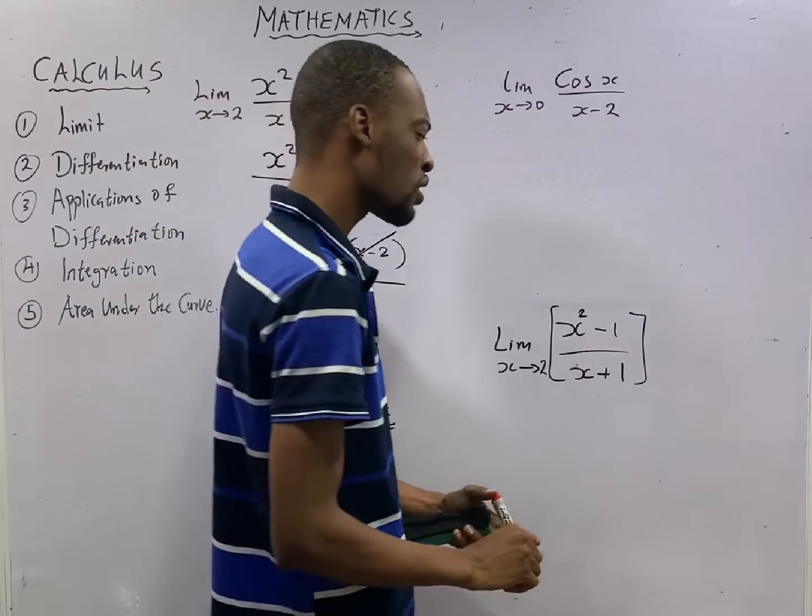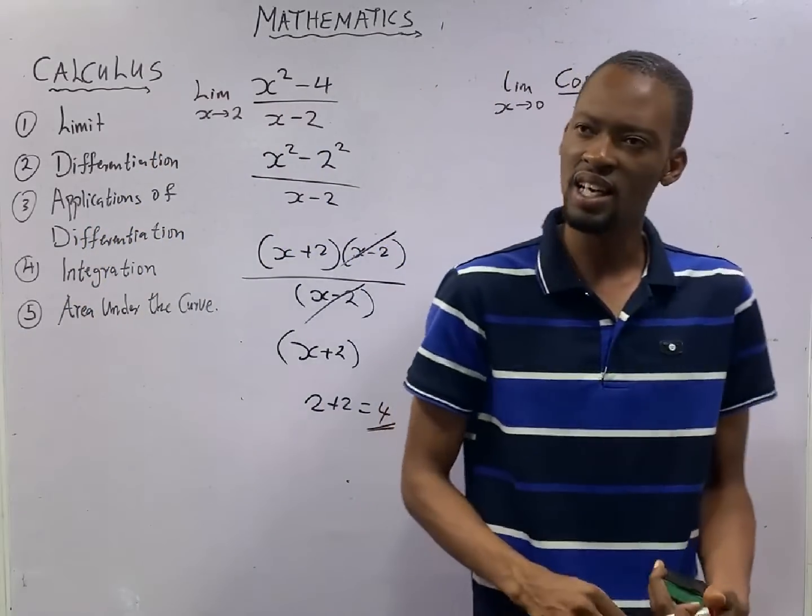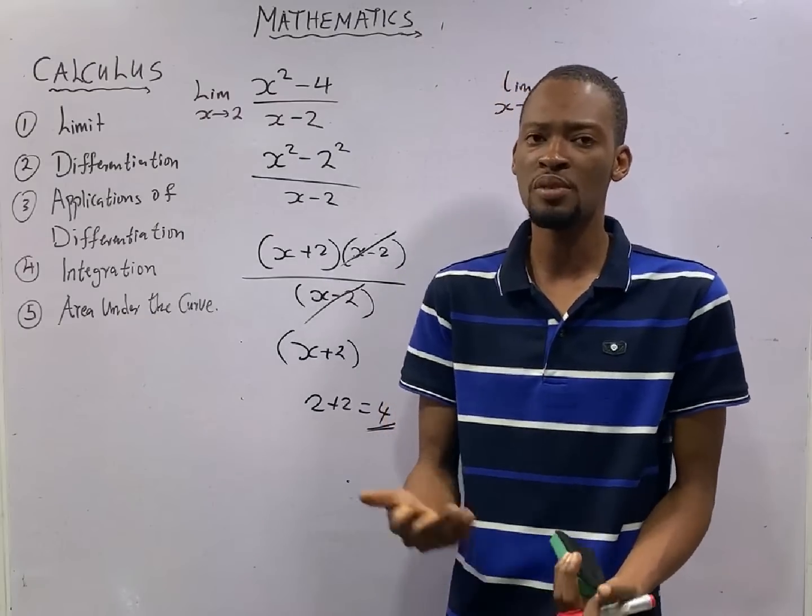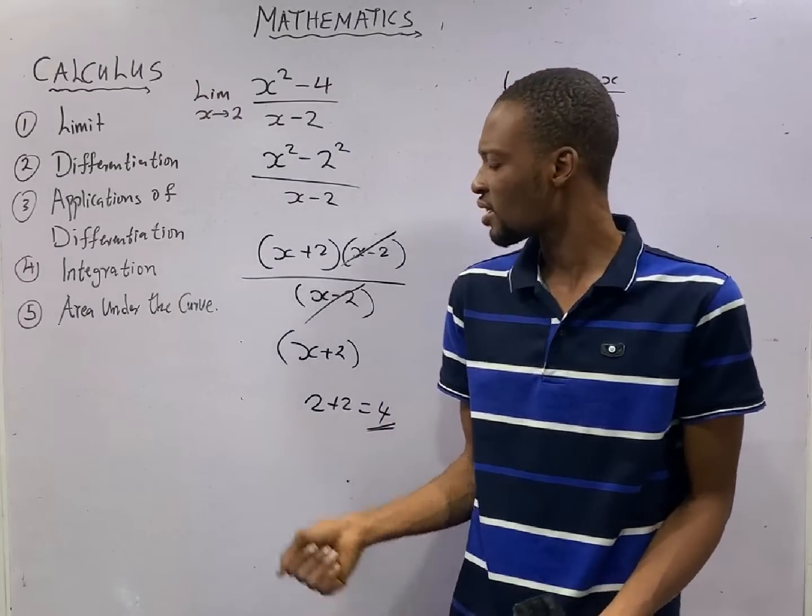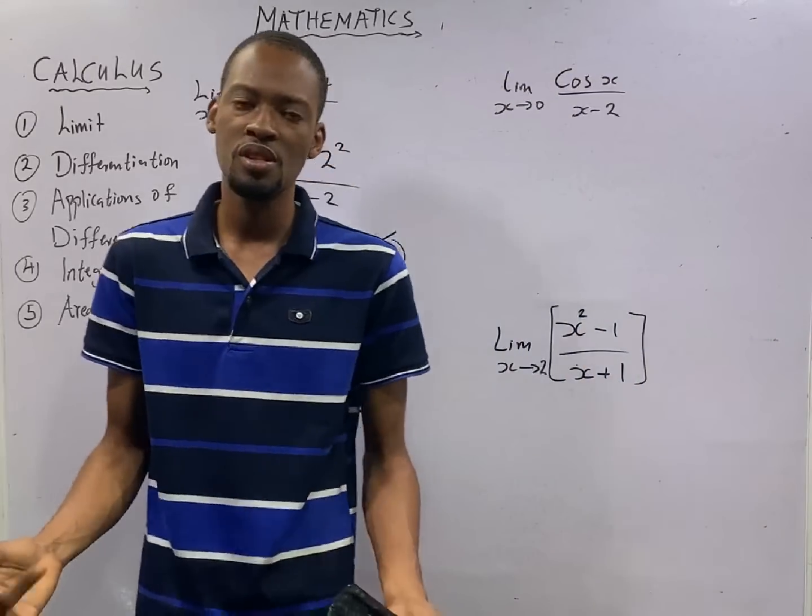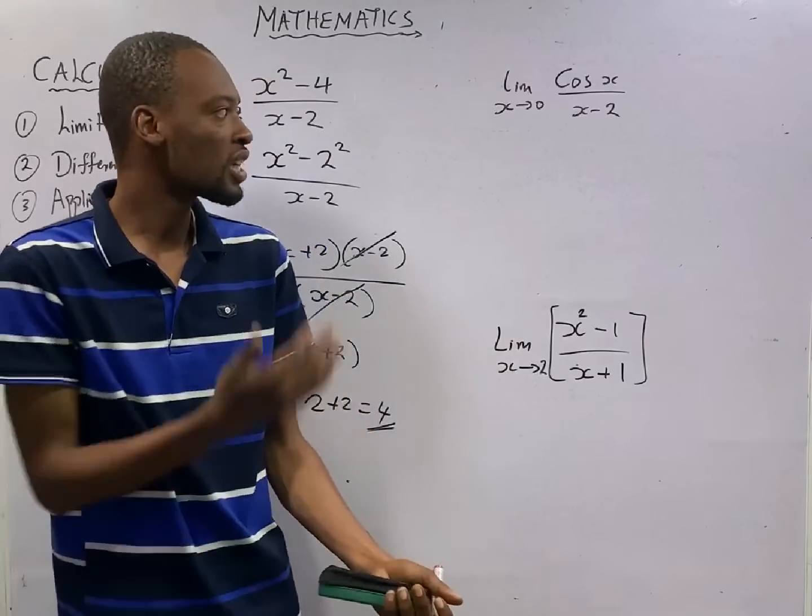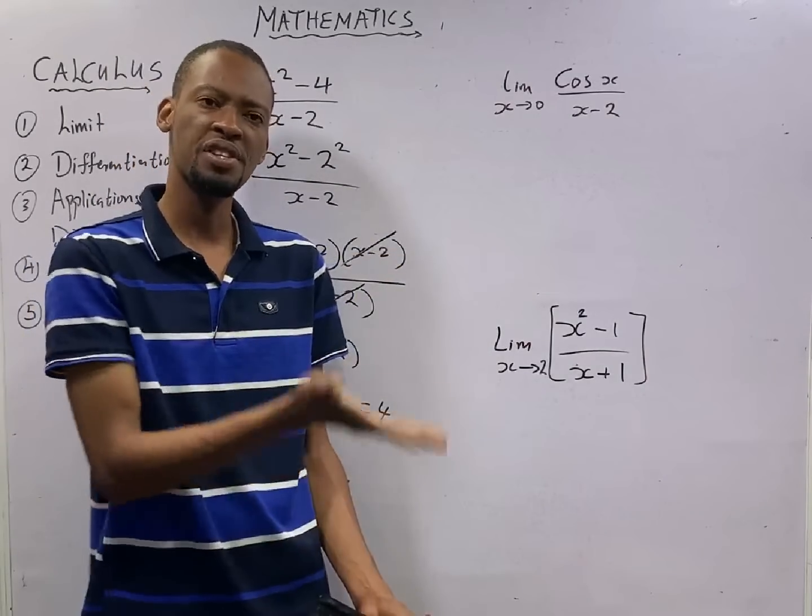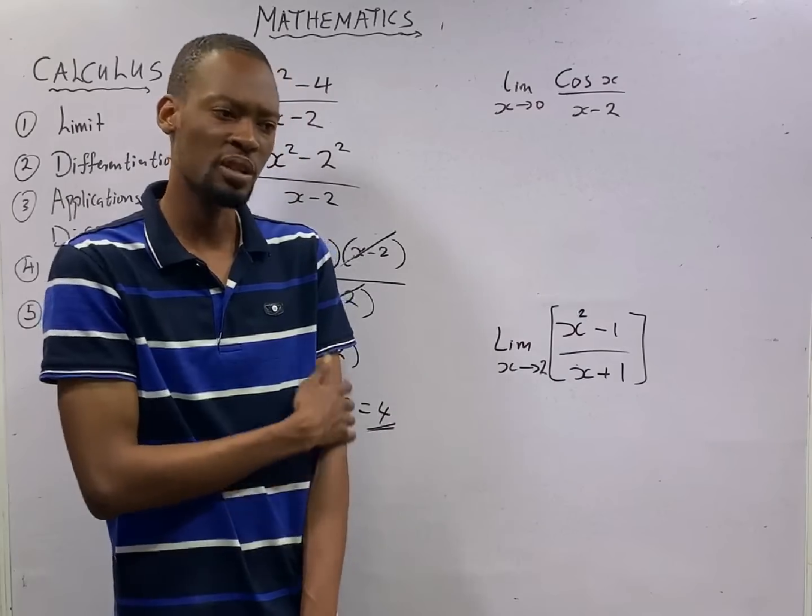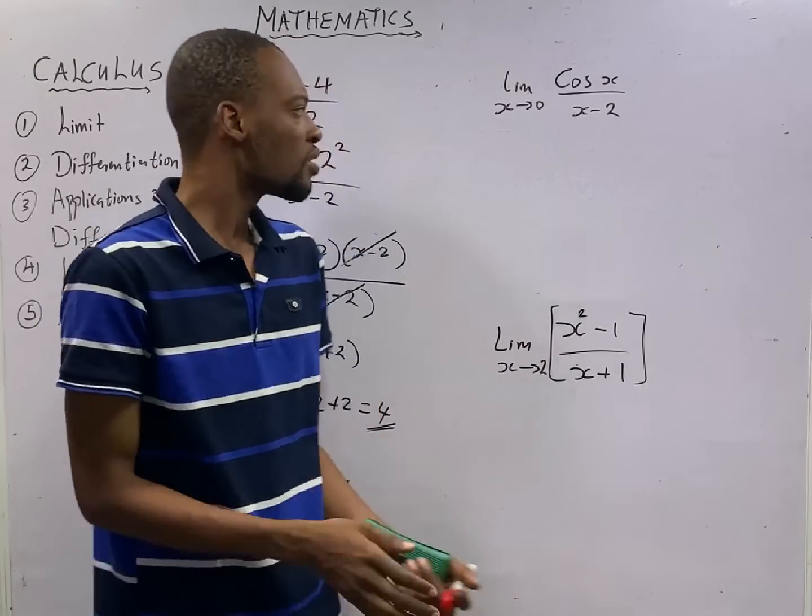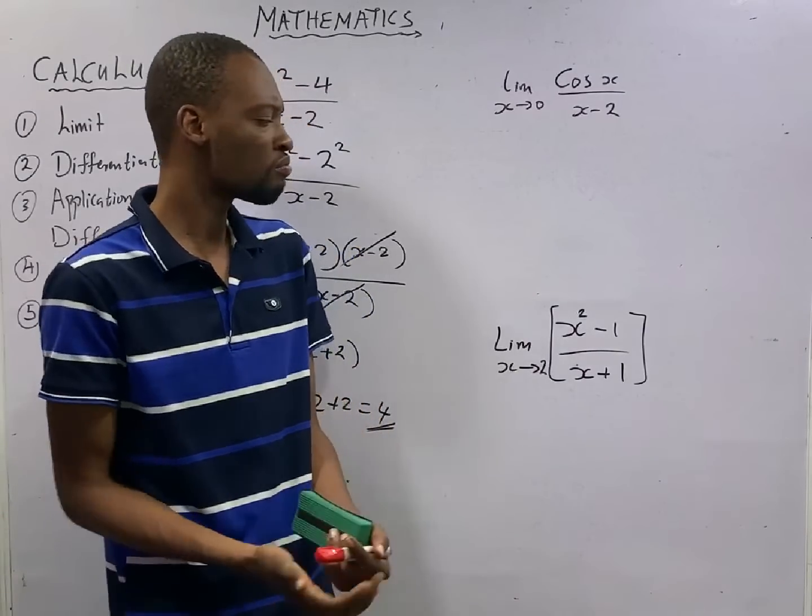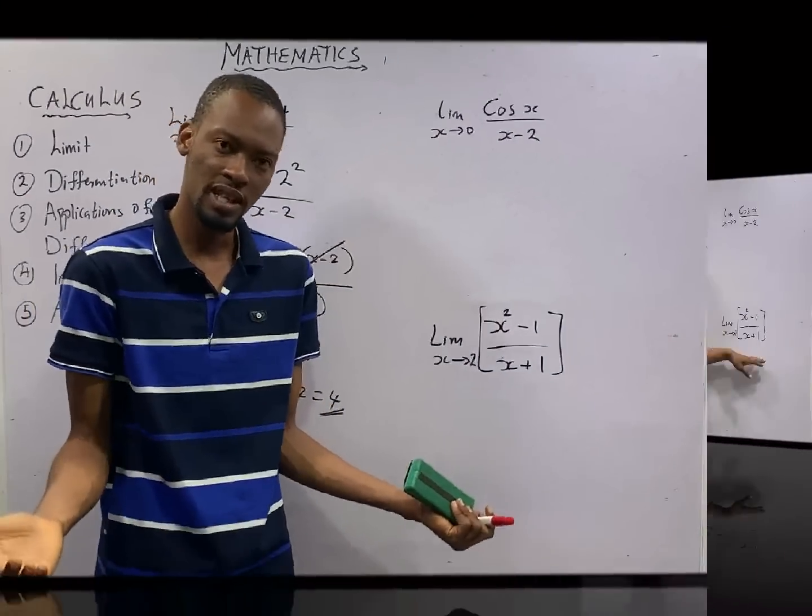The previous question we solved, where we factorize the quadratic expression, you can solve that using L'Hopital's rule. L'Hopital's rule states that if you are given a function, and in that function, when you substitute and you get 0, you can differentiate each of them. Differentiate the numerator on their own or differentiate the denominator on their own. But factorization and simplification is not too difficult for us, so we do not resort to that yet.